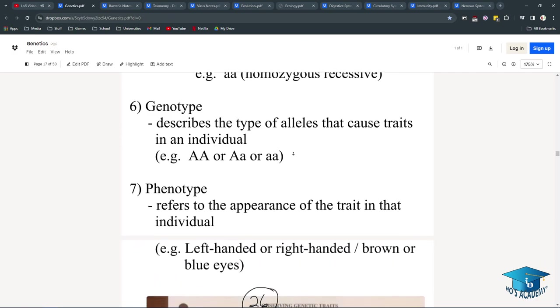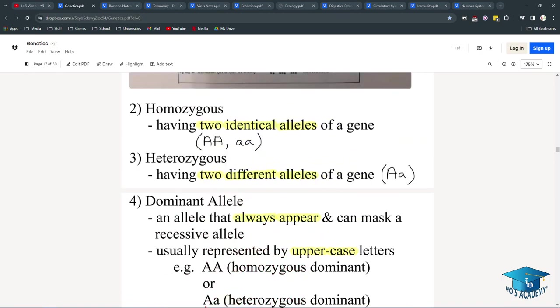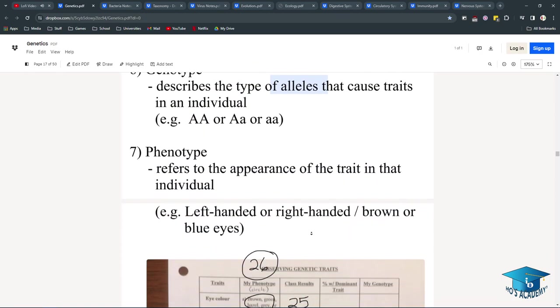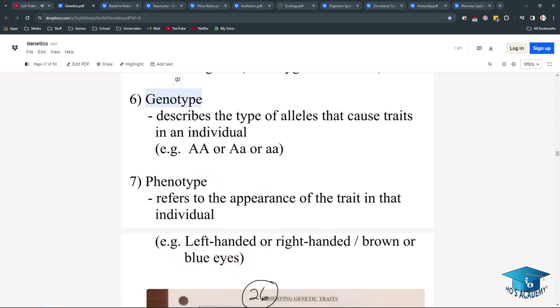Genotype describes the type of alleles that cause traits in an individual. So, this is the alleles themselves, and genotype describes the type of alleles. Phenotype refers to how the alleles show up. So, while genotype is the actual genes themselves, phenotype is how they show up. So, this capital A, let's say it codes for, I don't know, all black hair. Then, the phenotype will be all black hair, and the genotype will be double A.